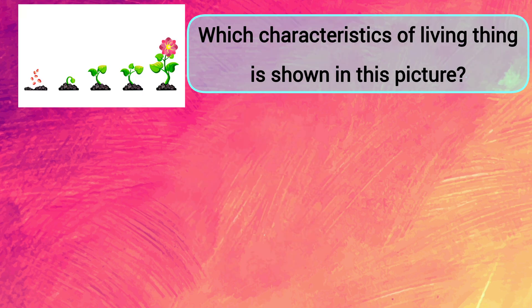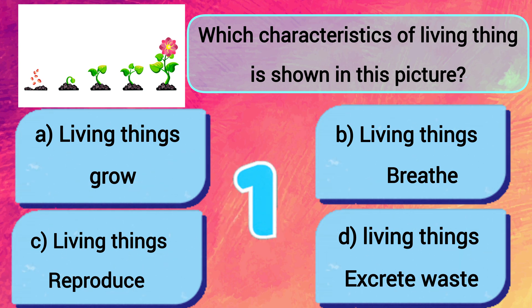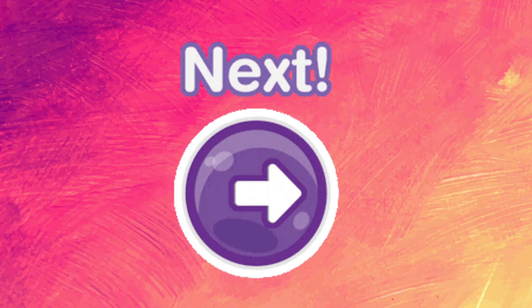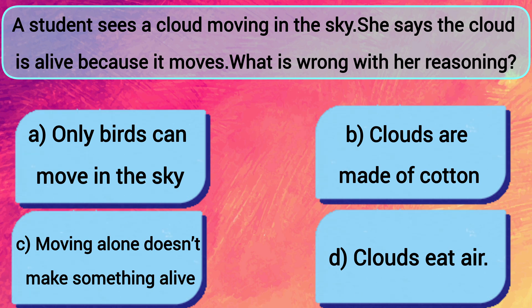Which characteristic of a living thing is shown in this picture? A: Living things grow. B: Living things breathe. C: Living things reproduce. D: Living things excrete waste. The answer is A — living things grow. A student sees a cloud moving in the sky and says the cloud is alive because it moves. What is wrong with her reasoning? A: Only birds can move in the sky. B: Clouds are made of cotton. C: Moving alone doesn't make something alive. D: Clouds eat air. The answer is C — moving alone doesn't make something alive.